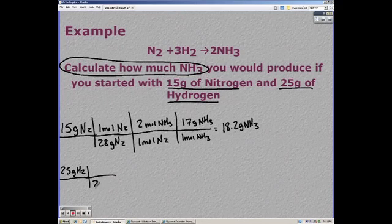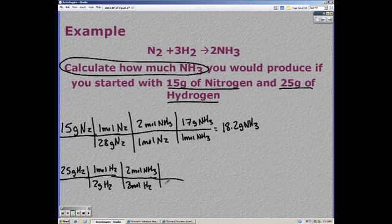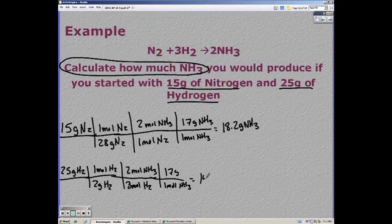So we convert our grams of hydrogen to moles of hydrogen. Make sure you remember our hydrogen is diatomic. Mole to mole ratio. And then moles of ammonia to grams. Solving that out, you get 141.7 grams.